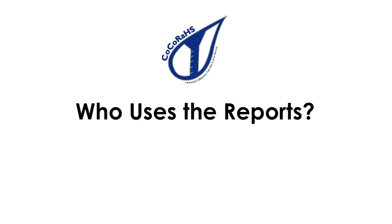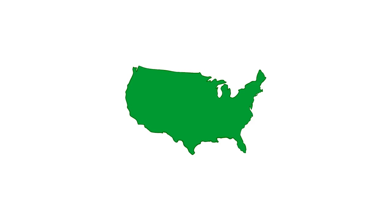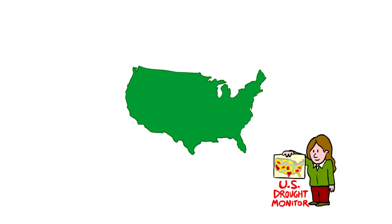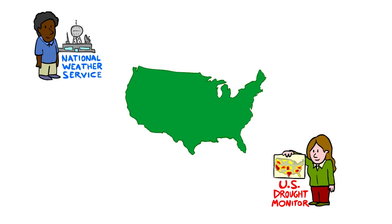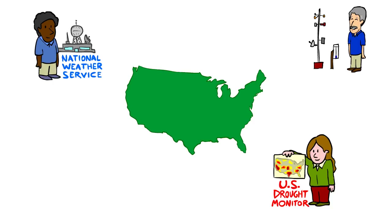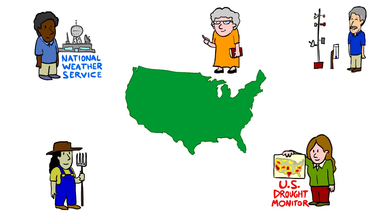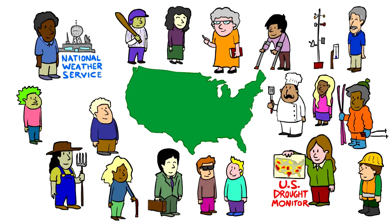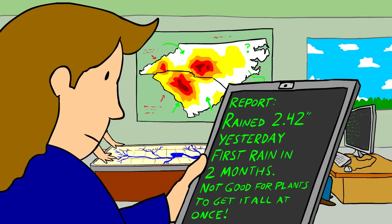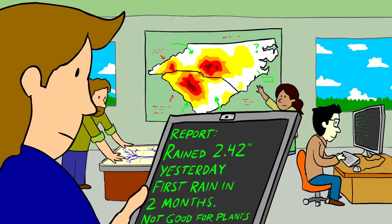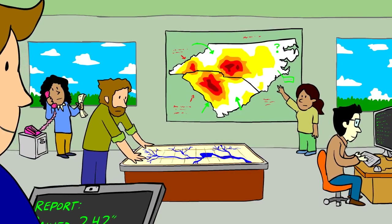CoCoRaHS condition monitoring reports are used across the country. The data on the website is accessed by U.S. Drought Monitor Committees, the National Weather Service, Weather and Climate Scientists, Farmers, Teachers, City Workers, and countless other individuals and organizations. For example, drought committees can read the condition monitoring reports and see if they need to change the drought status of an area based on the amount of precipitation and how the environment is responding.